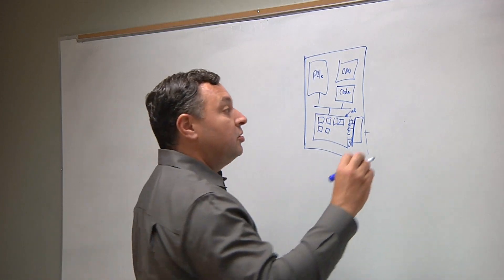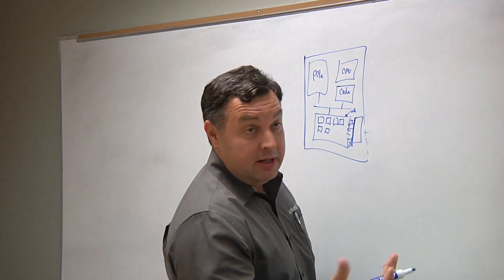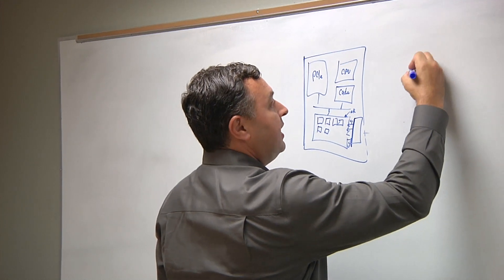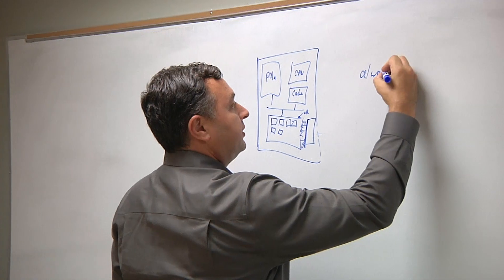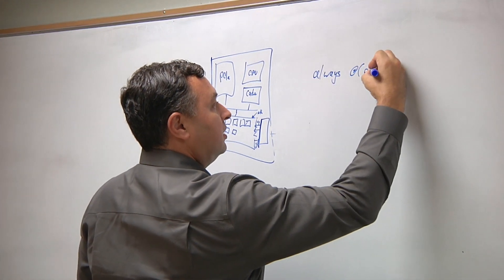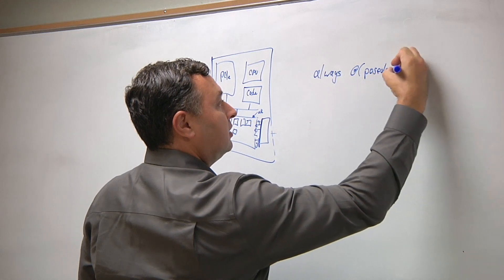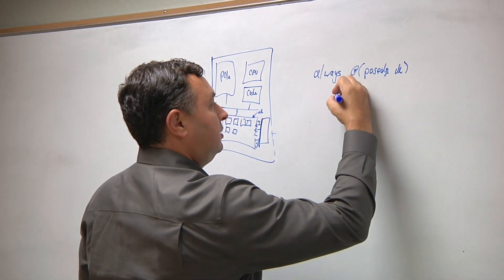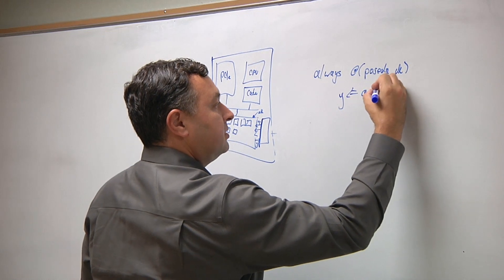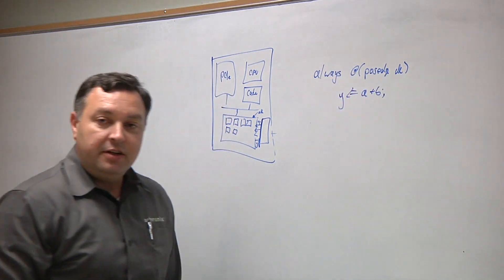All you need to do is open your favorite text editor, I prefer Emacs, and write a traditional Verilog design. So you may have inside your Verilog module something that looks extremely familiar. Always at posedge clock. Y gets A plus B. Verilog 101.